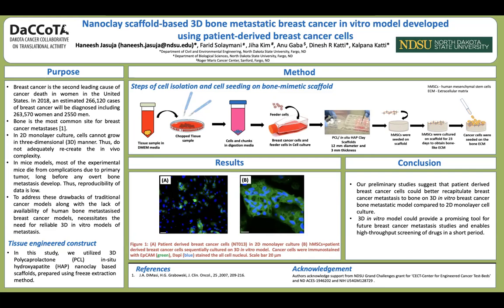Looking at the steps of cell culturing and cell seeding: first, we receive the patient tissue sample of breast cancer from Sanford Fargo, and then we chop that into smaller chunks. Next, we isolate the cells from tissue chunks using a digestion media that contains various enzymes. Then we culture the cells along with feeder cells that support the growth of breast cancer cells.